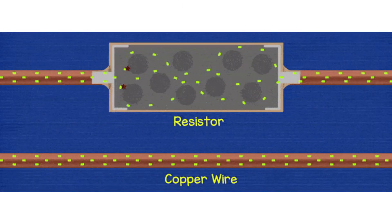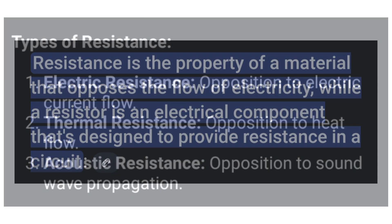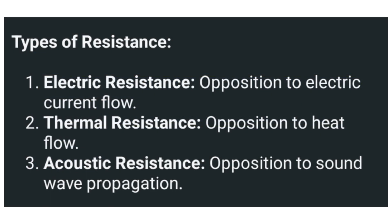Basically there are three types of resistance. The first is electric resistance, which is the opposition to the flow of electric current — this is the one discussed in this video. The second is thermal resistance, which is the opposition offered to heat flow. The third is acoustic resistance, which is the opposition offered to sound wave propagation.